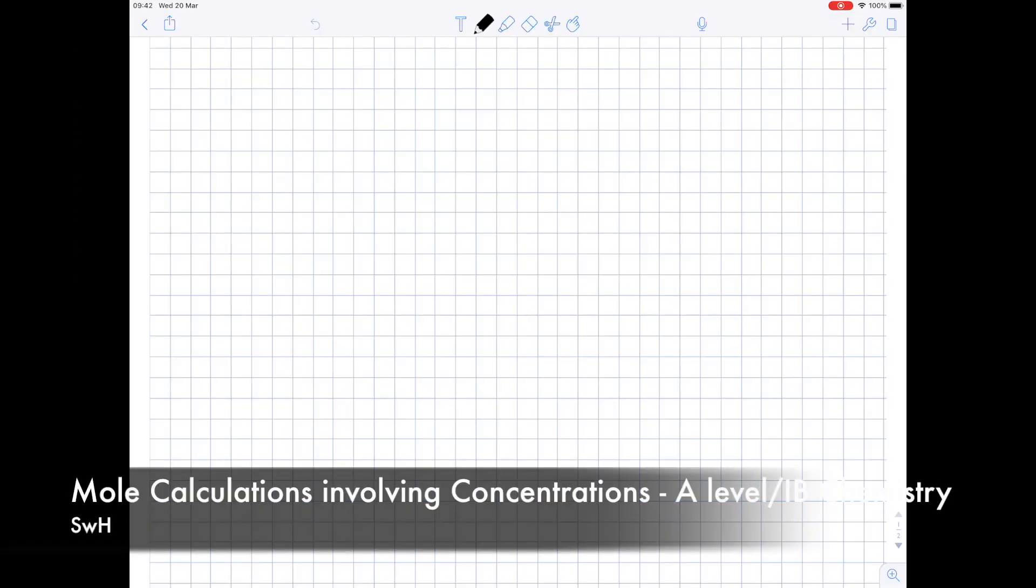In today's A-level IB Chemistry video, we're going to be looking at concentration calculations, so basically anything involving concentration. And this is a super key formula triangle for you, NCV. And that states that number of moles is equal to concentration times volume.